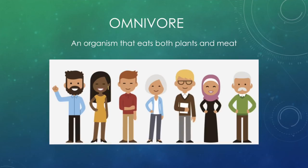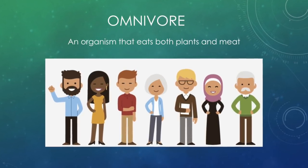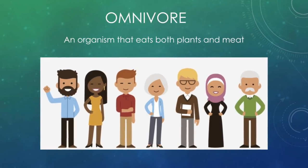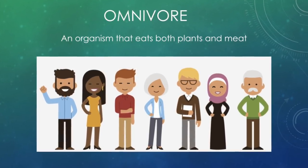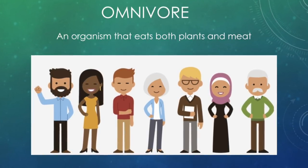Now let's move on to omnivores. Omnivores eat both — they eat both plants and meat. Technically, humans are considered omnivores, though obviously some may follow different dietary choices. Omnivores eat both plants and meat.